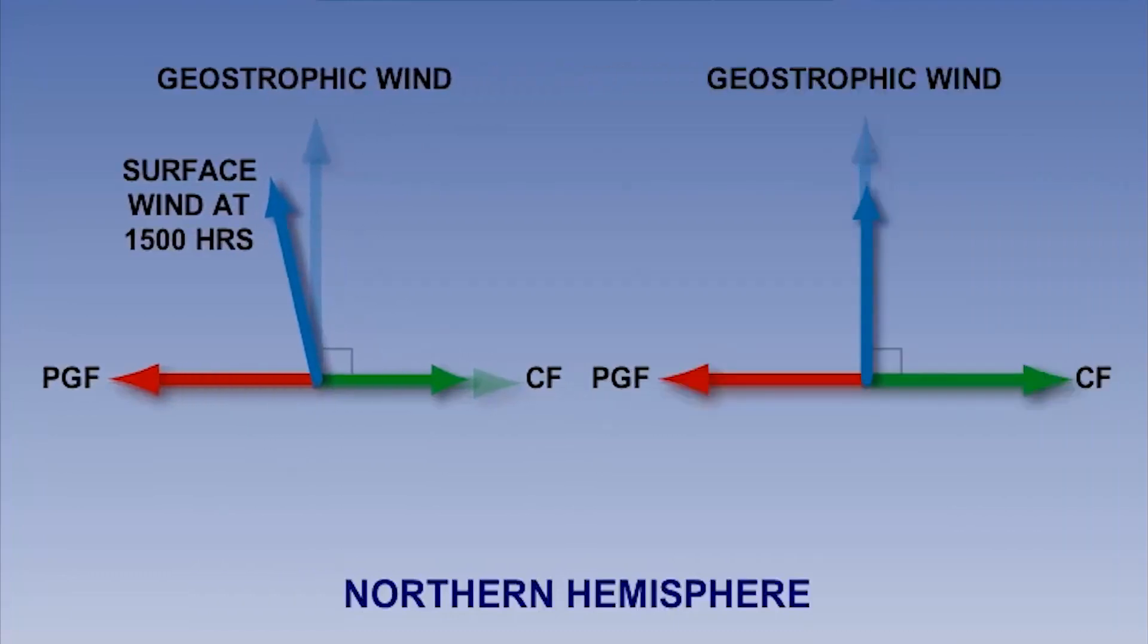But at 0600 hours, the surface wind is at its slowest, and the reduction in the Coriolis force is much greater. Therefore, the surface wind will be deflected by a greater amount from the geostrophic.